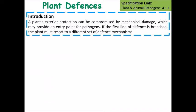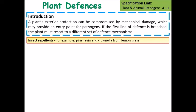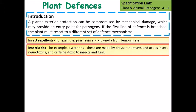A plant's exterior protection can be compromised by mechanical damage, which may provide entry points for pathogens. If this first line of defense is breached, a plant must resort to other defense mechanisms. It might produce insect repellents, for instance pine resin or the citrusy smell from lemongrass. It might also produce insecticides — things that are toxic to insects and fungi, such as caffeine.